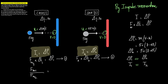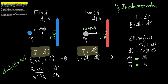Now let us look at the force part. We know that Δp1 = F_average1 × Δt1 and Δp2 = F_average2 × Δt2. Dividing these two equations — since both Δp values are equal — we get: (F_average1 × Δt1) / (F_average2 × Δt2) = Δp1 / Δp2 = 1, which implies F_average1 / F_average2 = Δt2 / Δt1.